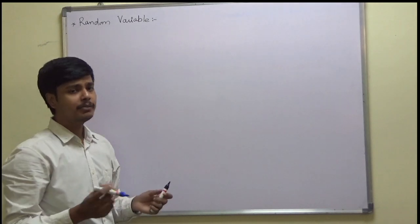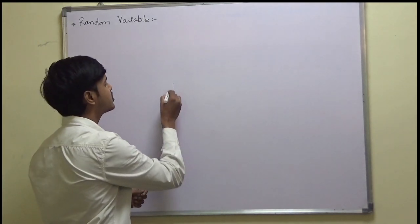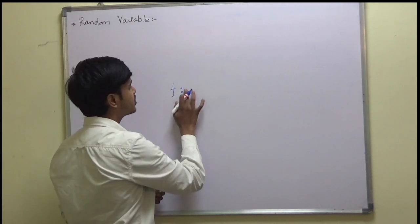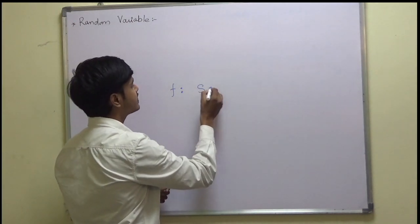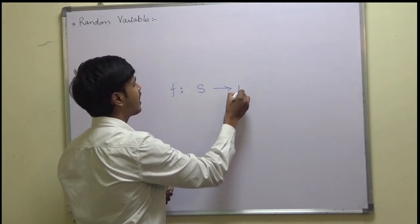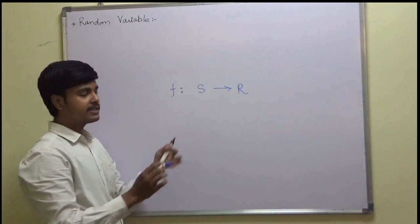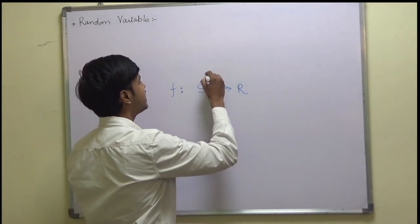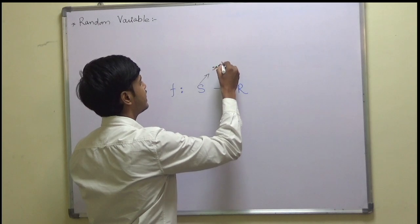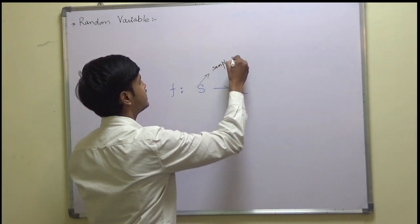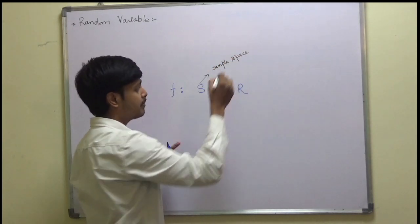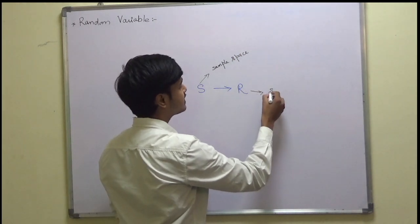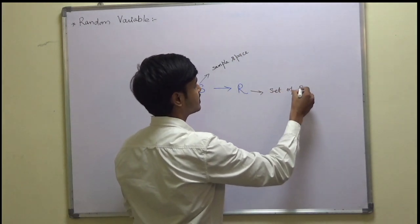This random variable is nothing but a function — a function from S to R. Where S is nothing but the sample space for the random experiment, and R is the set of real numbers.